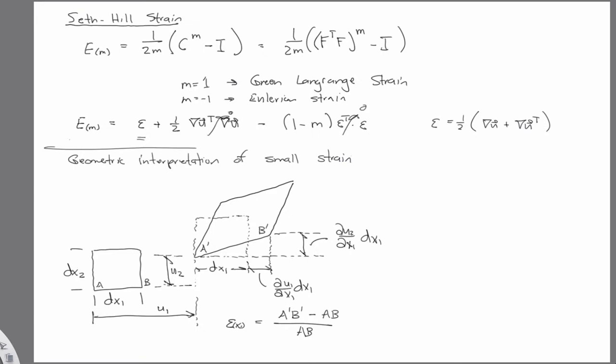So it's the new length, a prime b prime, minus the original length, ab over ab. Change in length divided by length. Well, ab is dx, so we have a prime b prime minus dx over dx. And another way you could write that would be a prime b prime over dx minus 1.